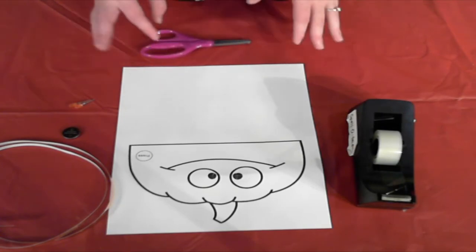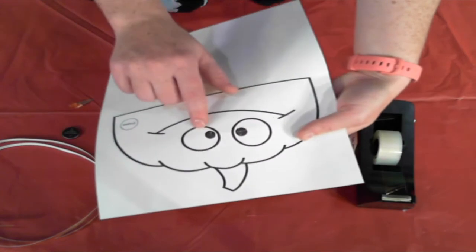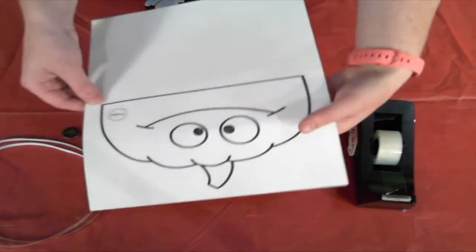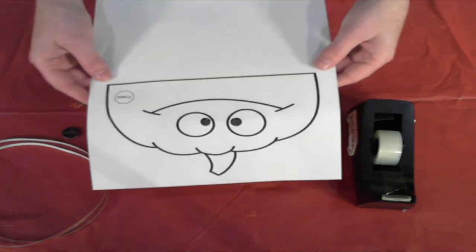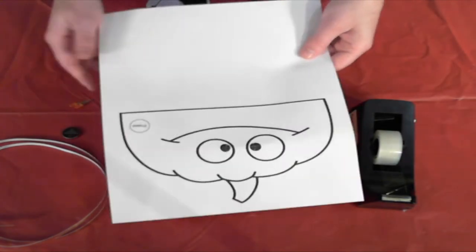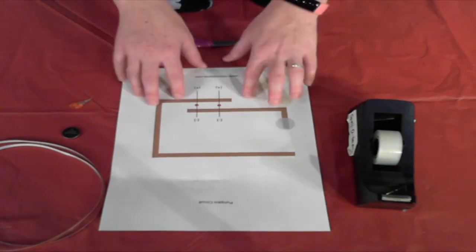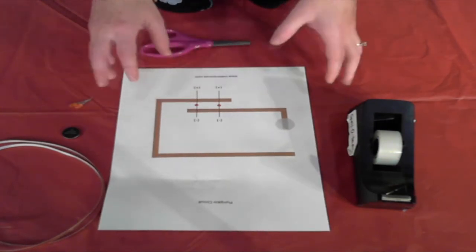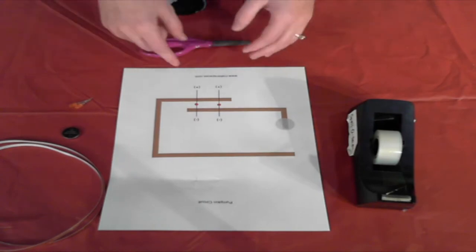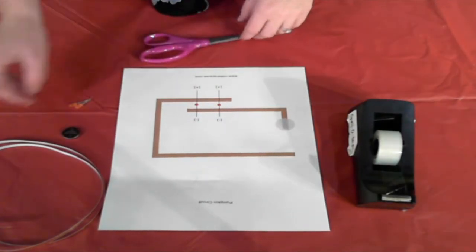So the first thing I went ahead and did was cut two little slits in the eyes of my pumpkin so they're ready to push the LED lights through, because the goal by the end of the project is that we'll have two LED lights poking through and lighting up. So let's go ahead and flip this over and we can get started with our paper circuit. As the template shows, we're just going to put our copper tape over the lines and then we'll put down our LED and our battery.